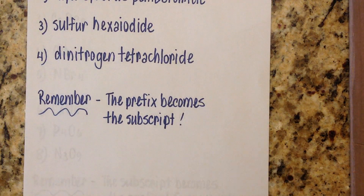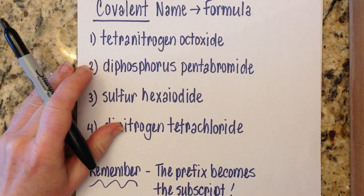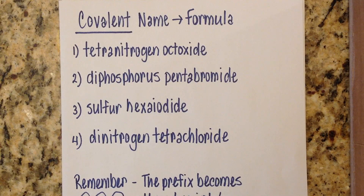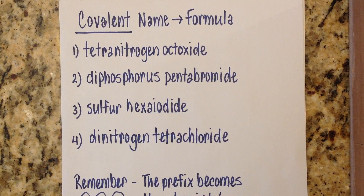Let's start with the name and convert it into a formula. A good way to do this would be to pause and write down the names of these first four — they're long. This really makes you grateful for chemical formulas, because nobody would want to write these out all the time. They kind of look like dinosaur names. Write those down, then come back and we'll go through them together.